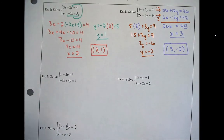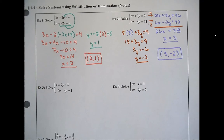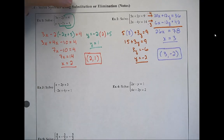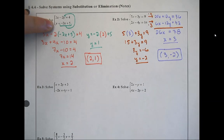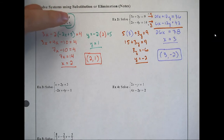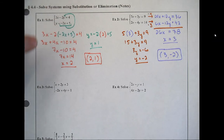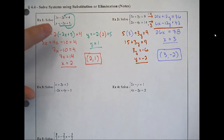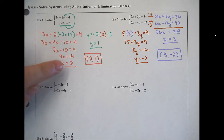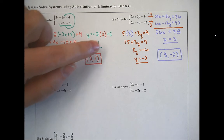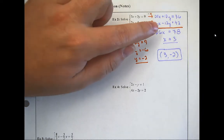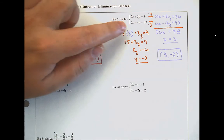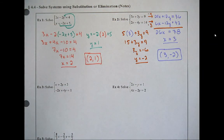Stepping back to compare the two methods: substitution is best when you have a variable by itself — a y equals or x equals — then substitute into the other equation. Elimination is used when no variable is by itself. Substitution takes a bit more work at the start but the second half is quick. Elimination finds the first variable quickly but takes more work to find the second.